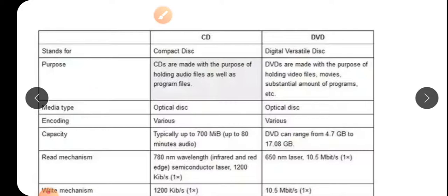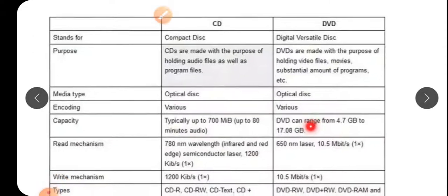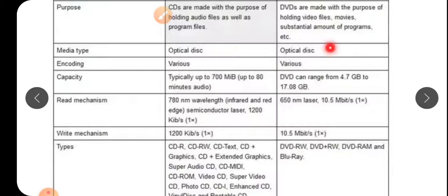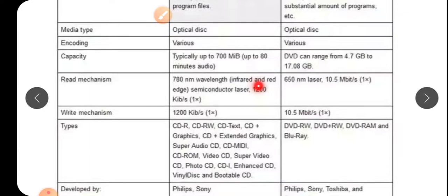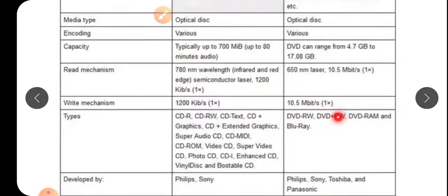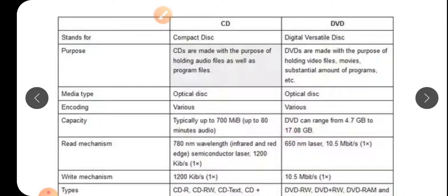Now what is the purpose of CD? CDs are made with the purpose of holding audio files as well as program files. DVD क्या करता है? DVD made with the purpose of holding video files, movie, substantial amount of program etc. Compact disk से कहीं ज्यादा information हम DVD पे store करते हैं. Media type: optical disk. Both optical disk. Capacity: typically up to 700 megabytes, up to 80 minutes audio in CD. And DVD में 4.7 GB होते हैं, 17.8 GB. मतलब 4-6 घंटे की आराम से आप उसमें movie देख सकते हो. So these are the major differentiation of CDs and DVDs.